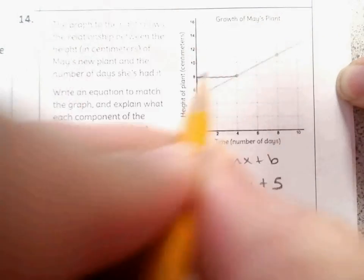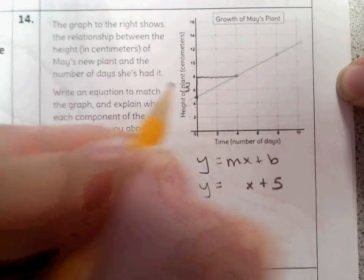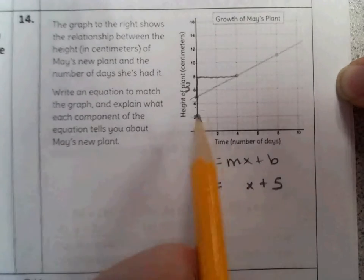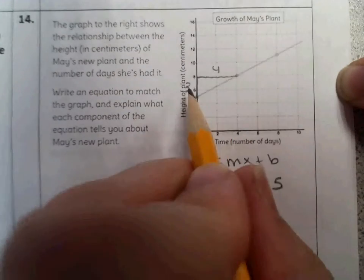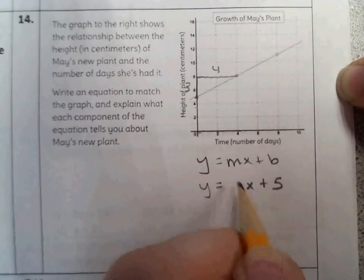So to get from one point to the next, we go from 5 to 8, so that's a rise of 3. And we go from 0 to 4 on the run, so that's a run of 4. So the slope would be rise 3 over run 4, 3 over 4.